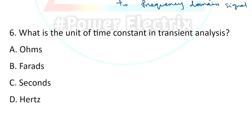Question number six: What is the unit of time constant in transient analysis? The unit of time constant is seconds. So the correct answer is option C.